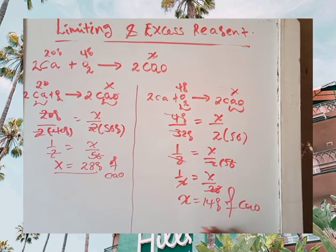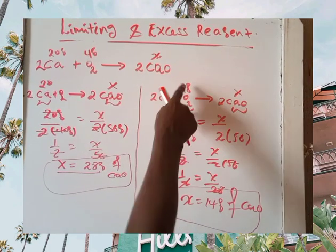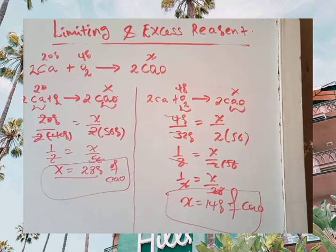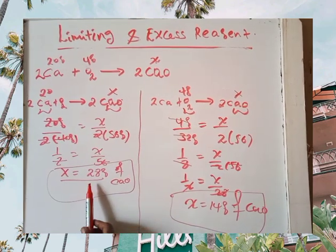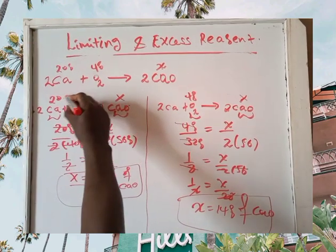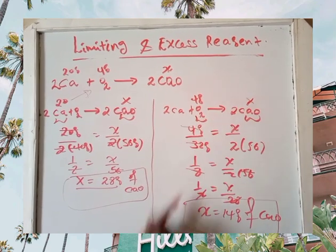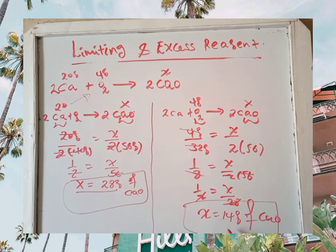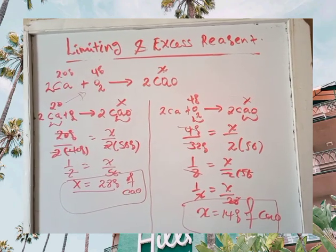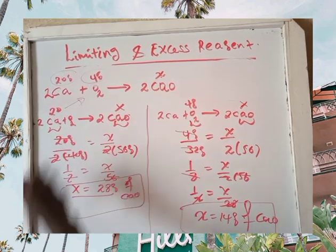Now, using 4 grams of oxygen: the molar mass of oxygen (O₂) is 32 grams per mole, so we have 4 over 32, which equals 1 over 8, which equals x over 2 times 56. Solving this gives x equal to 14 grams of calcium oxide produced from 4 grams of oxygen. By using 20 grams of calcium metal we get 28 grams, but by using 4 grams of oxygen we get only 14 grams. So calcium metal is the excess reagent and oxygen is the limiting reagent.